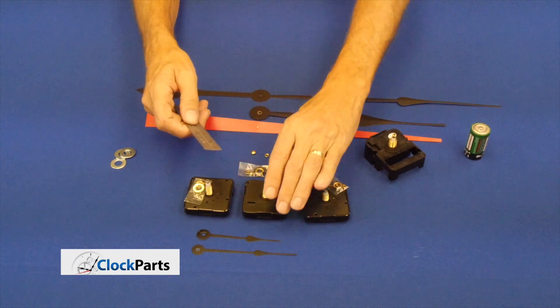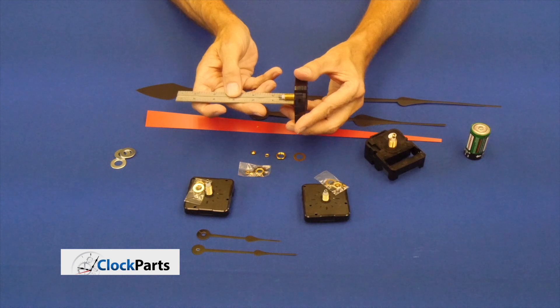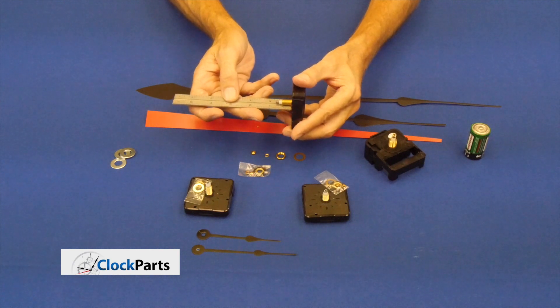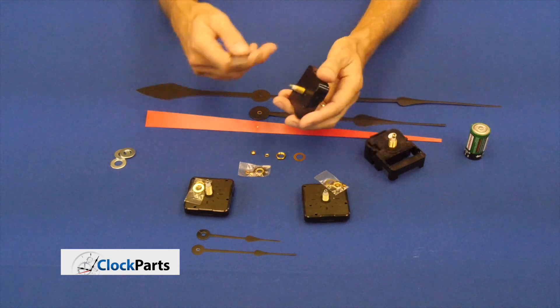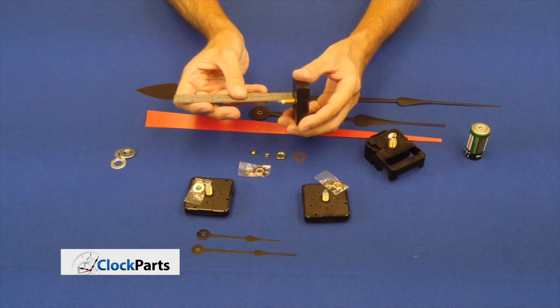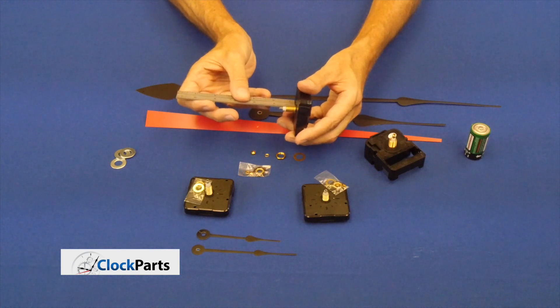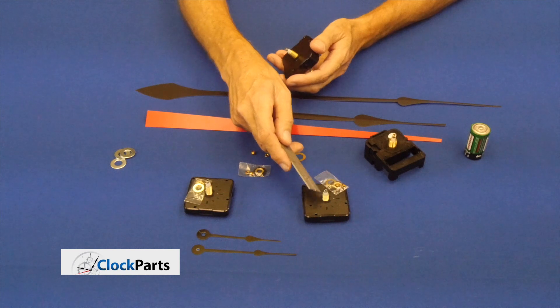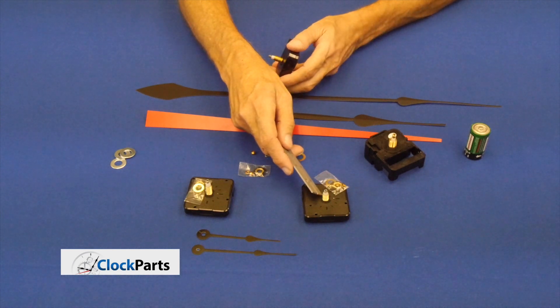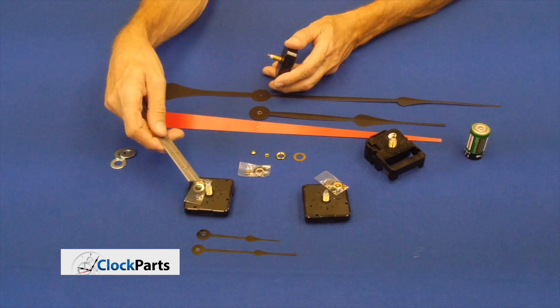But when you are making this measurement, you're going to measure one, the overall length, and that's only important if you have a lens because you don't want your hands to hit the lens. So the overall length is only important if you have a lens on your clock. However, the threaded part is extremely important because this threaded part is shorter. If you have a thicker dial face, like a half an inch, this one would be too short, would not work. This one would be fine.